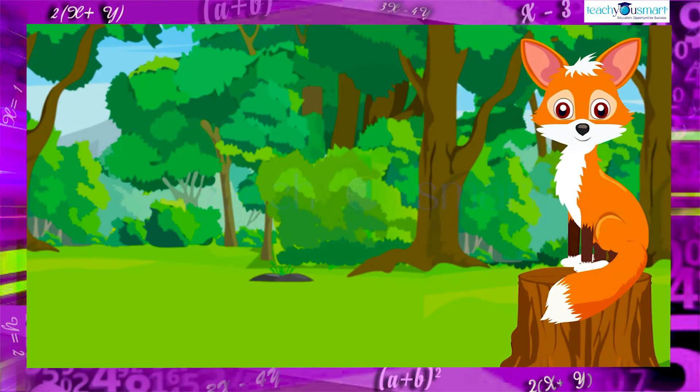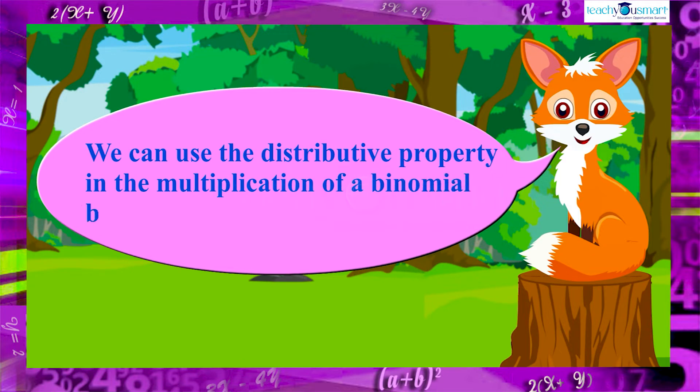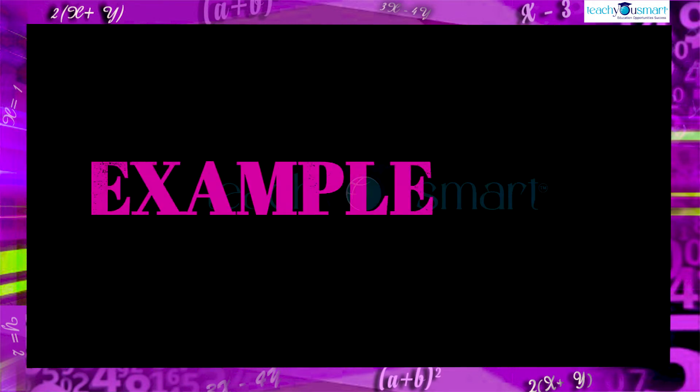As we all know, we can multiply a monomial by a polynomial. Here also we use the distributive property in the multiplication of a binomial by a binomial. Let's do an example.